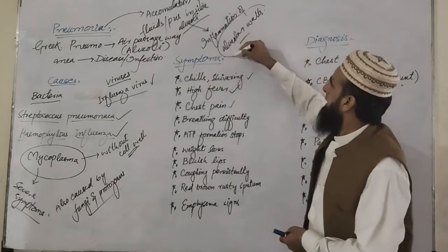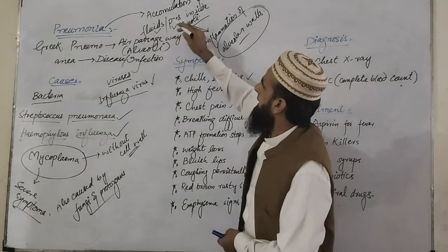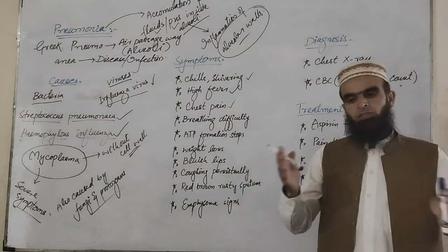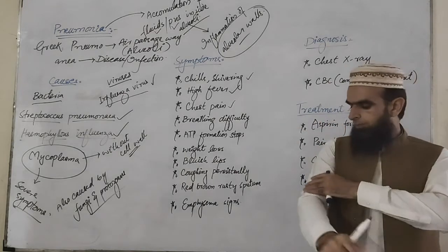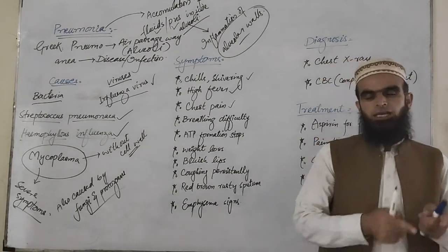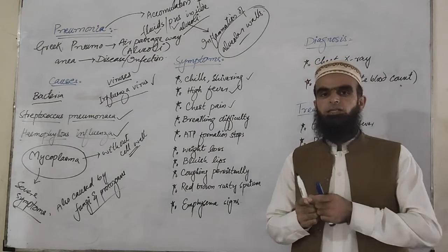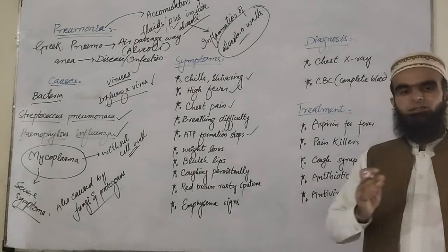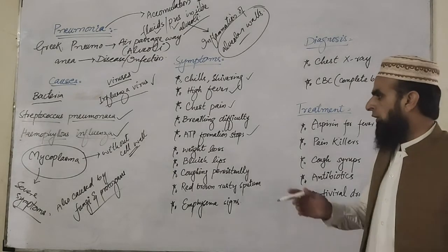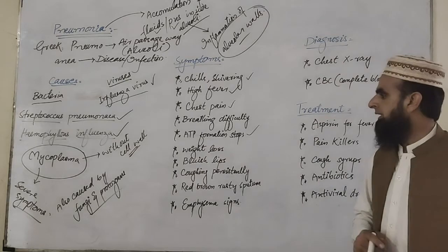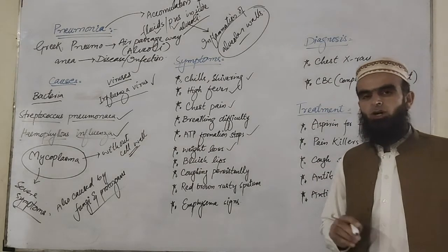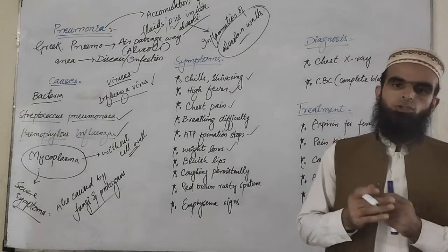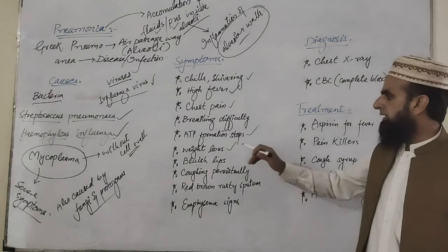Once the alveolar walls are inflamed and the alveoli are filled with pus and fluids, it results in reduced exchange of gases. When there is less exchange of gases, less oxygen is provided to the muscle cells. If less oxygen is available to muscle cells, less respiration takes place, resulting in less energy production. Therefore, ATP formation either stops or is reduced. When energy production is reduced, weight loss is caused because fats and proteins inside the body are broken down to produce energy.